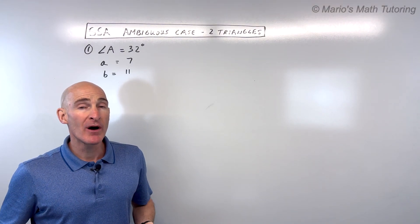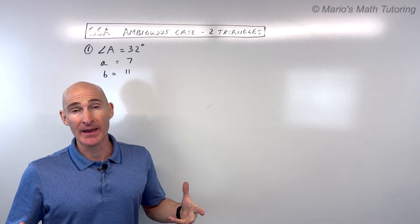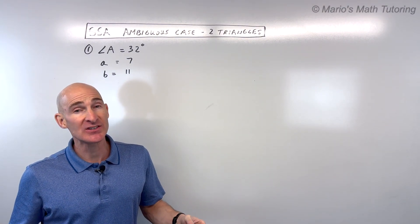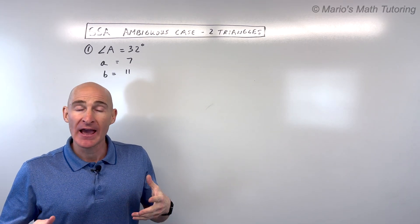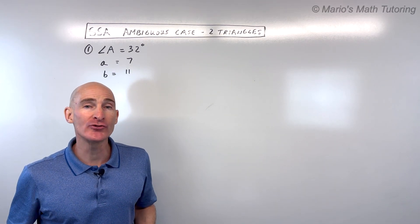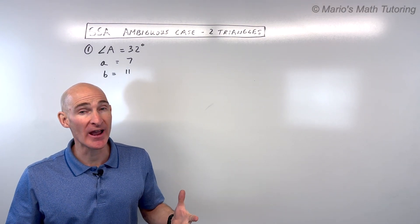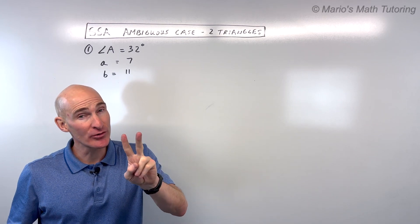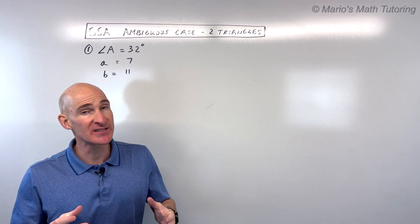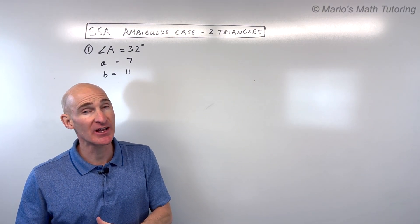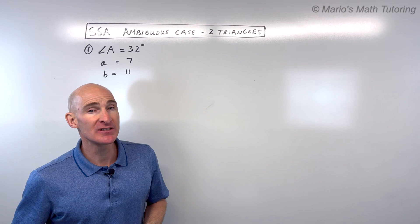In this video, you're going to learn about the side-side-angle ambiguous case when there are two triangles, and how to draw and solve both of those triangles. We're going to go through two examples together, so maybe the second one you can practice on your own. Let's dive in.